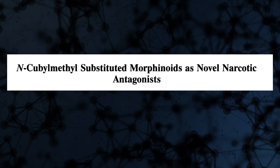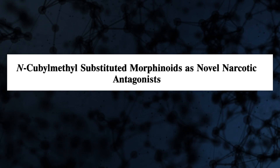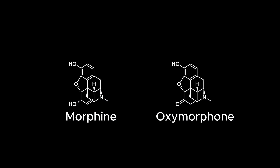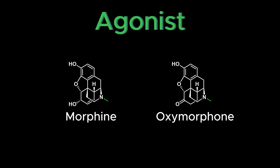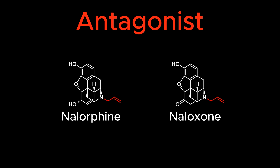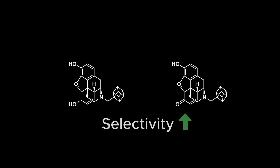An early use of cubane in drug design was in the research of novel opioid antagonists. The activity of opioids, such as morphine, is highly dependent on the group attached to the nitrogen atom. When a methyl group is attached, the molecule acts as an agonist, activating the receptor. When it is replaced by an allyl group, it acts as an antagonist, blocking the receptor. This creates molecules which are useful in treating opioid overdoses, such as naloxone. In this case, the replacement with cubane gave more selective, but less potent, opioid antagonists.